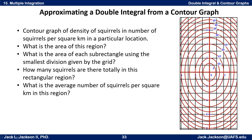Here are a couple of questions for you — see if you can answer these basic ones right off the bat. What's the total area of this region? What's the area of each of these sub-regions if we go with just the ones on the grid? And the bigger questions: how many squirrels are there totally in this rectangular region, and what's the average number of squirrels per square kilometer in this region?